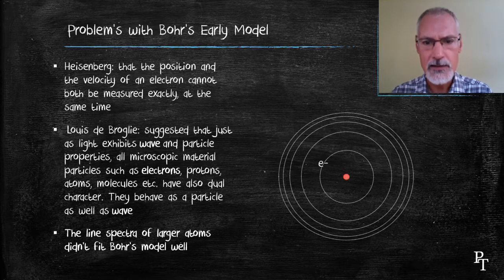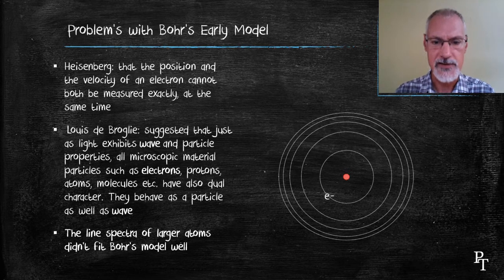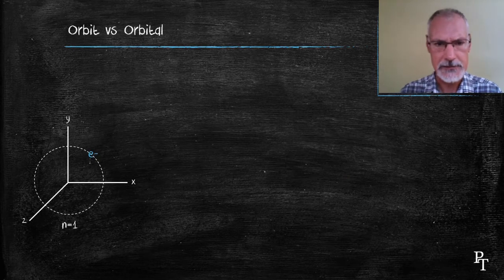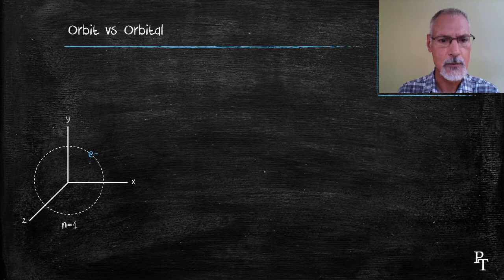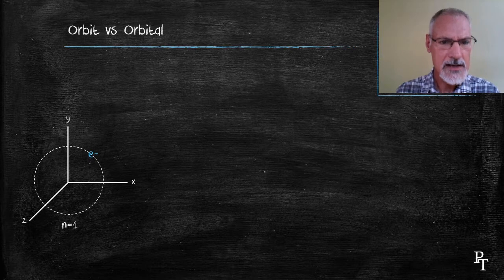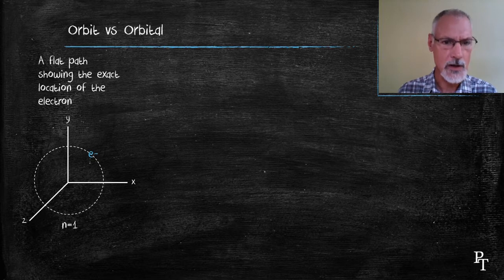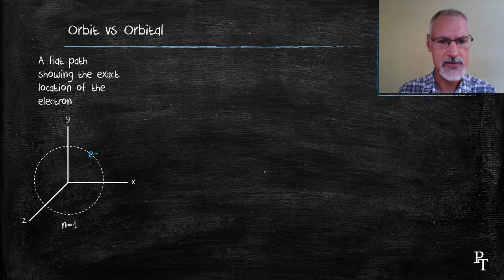So the quantum mechanical model seeks to address all of these concerns. First off, let's take a look at the concept of probability and where the electron is located, as outlined by Heisenberg's problem. The idea of Bohr's orbit put the electron on a two-dimensional path, hence one knew exactly where it was. If one incorporates the idea that you can't know both, then all that one can say is where you are likely to find an electron.